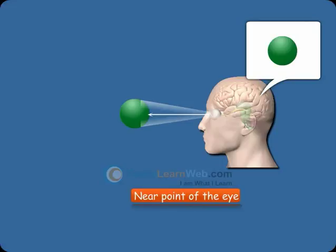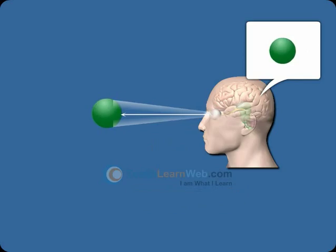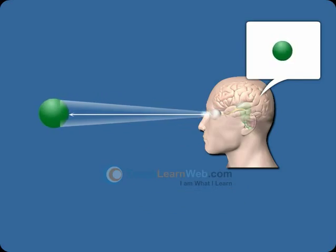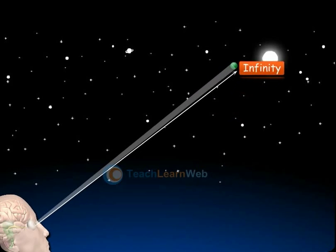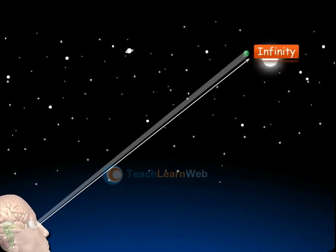The near point of a young adult with normal vision is about 25 cm. The farthest point up to which the eye can see objects clearly is called as the far point of the eye. It is infinity for a normal eye. So, the normal distance at which an individual can see objects clearly is between 25 cm and infinity.